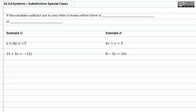When working with systems of equations, there's a few special cases for substitution that you need to be aware of. If the variables subtract out to zero, then it means either there is infinite solutions or no solution.